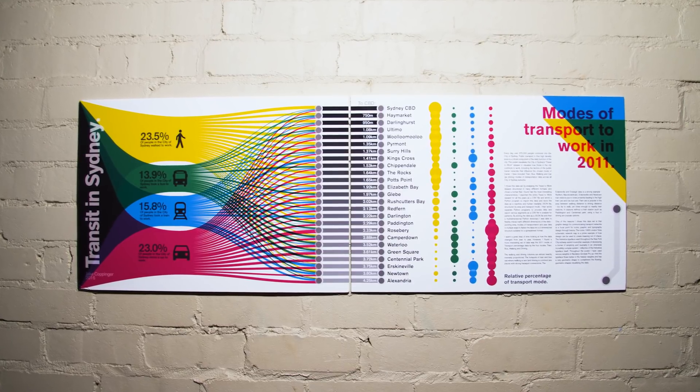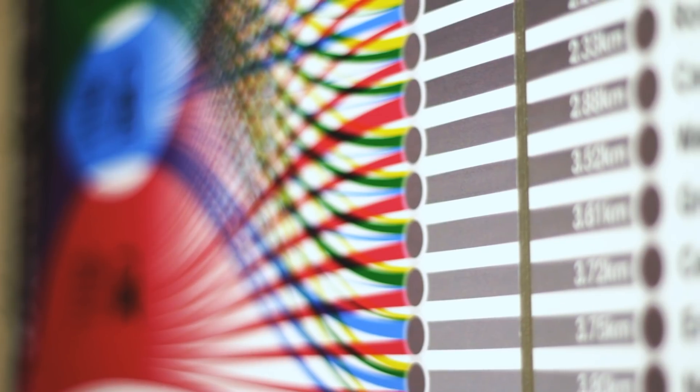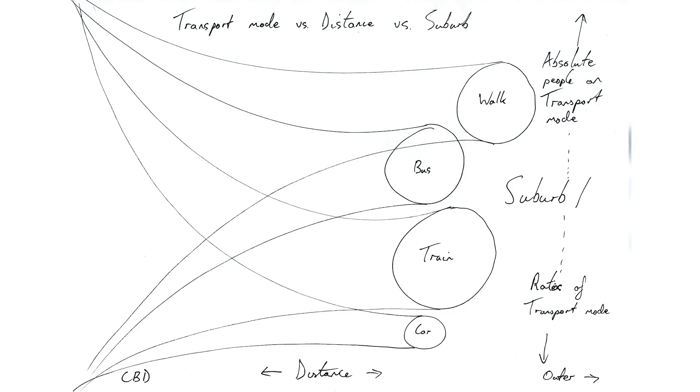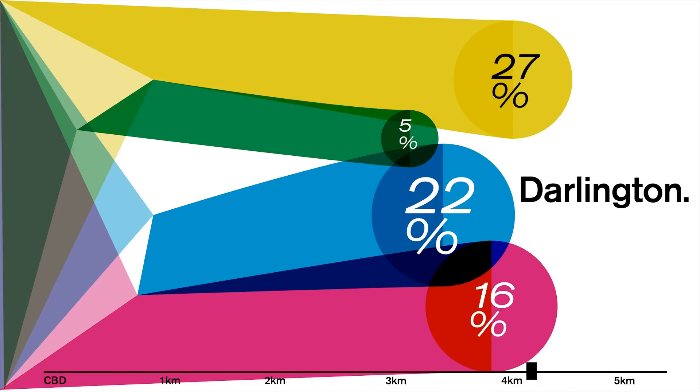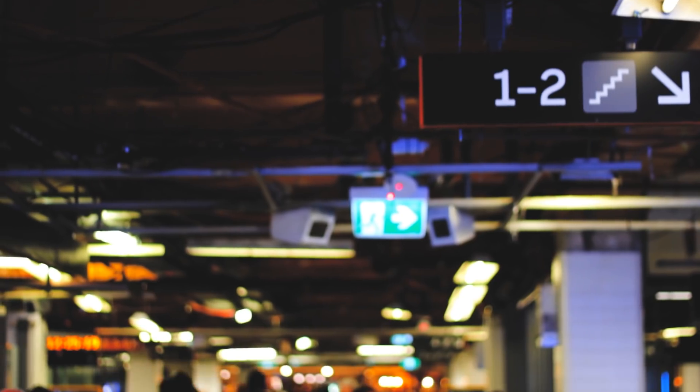I first created a poster in the Swiss design style using an Open City of Sydney dataset. I took the design style of this poster to design an interactive visualisation to display the use of different transit modes in Sydney. I chose to use the Swiss graphic style because it conveys the information with a unique clarity. For this reason, it's often used in signage design to make sense of complex information.